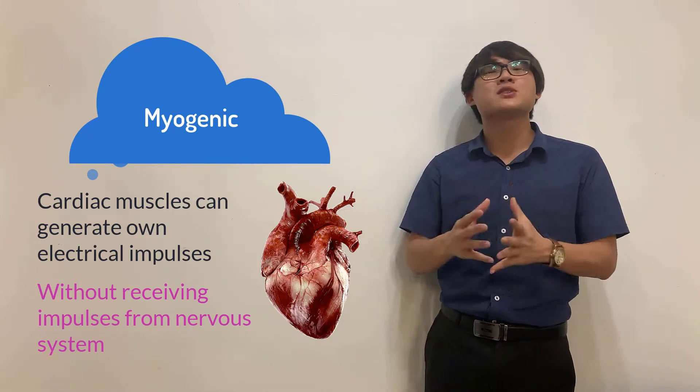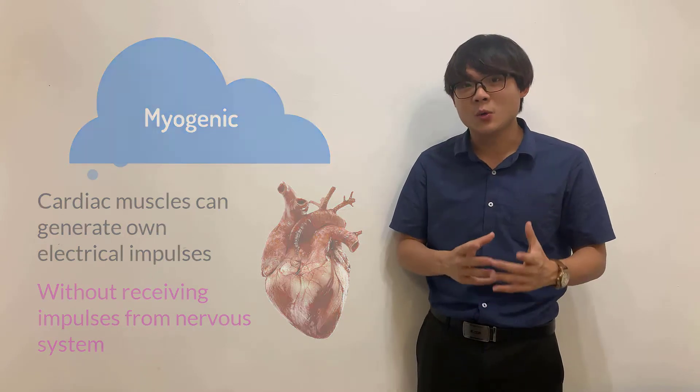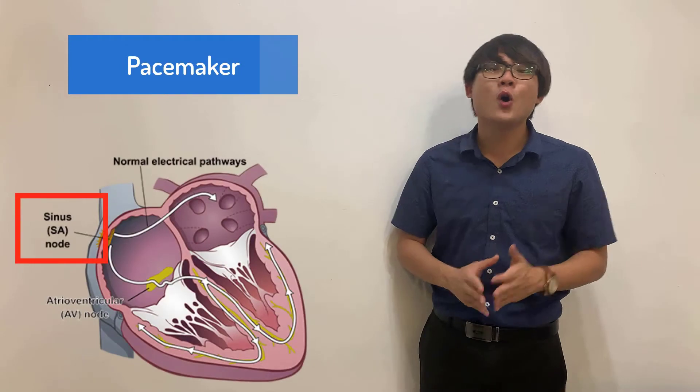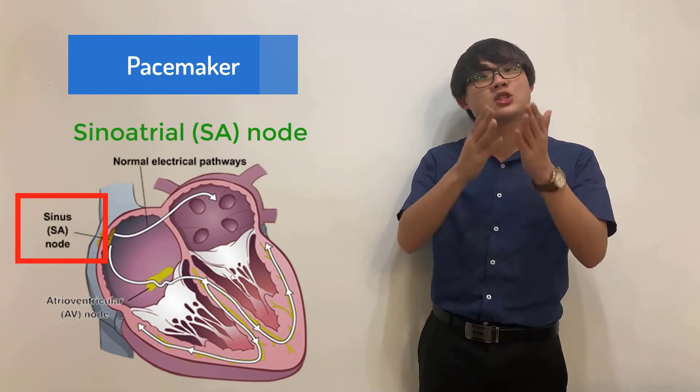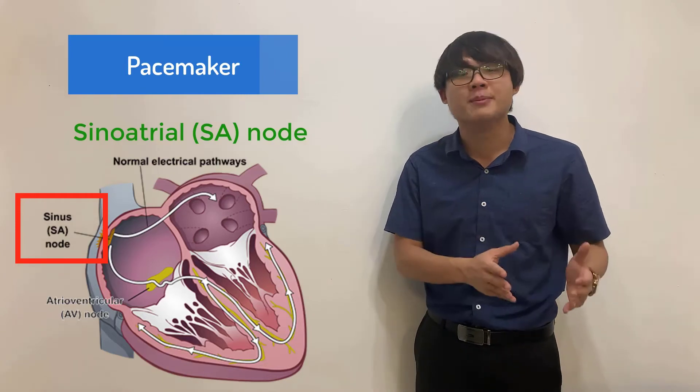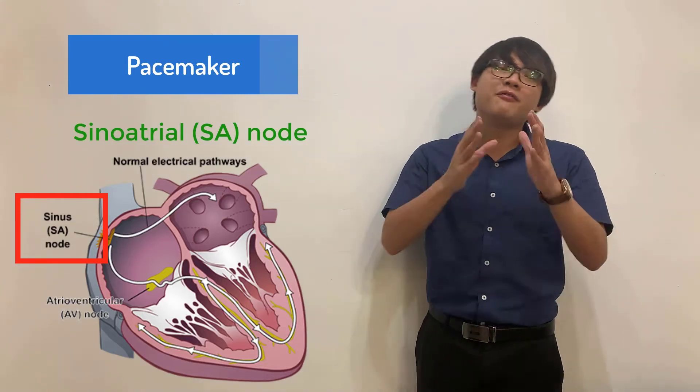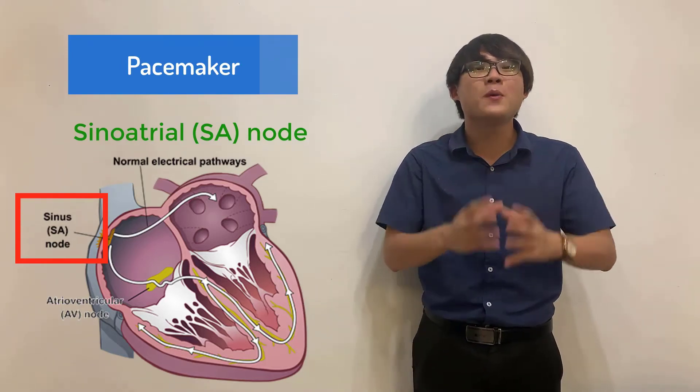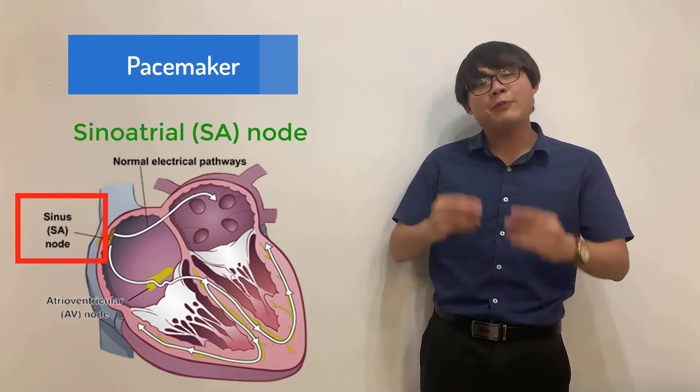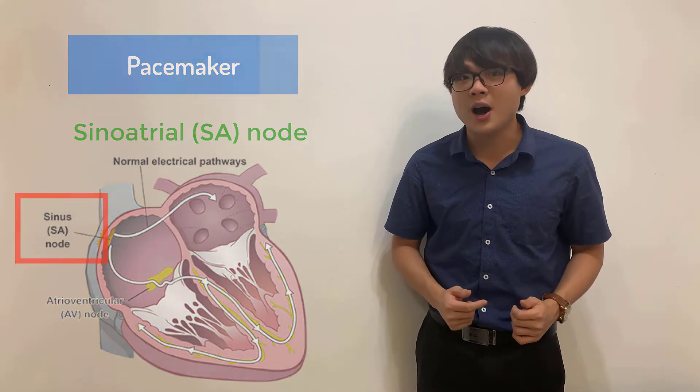The cardiac muscle being myogenic is very important. We have a special group of cardiac muscle that is called the pacemaker. The primary pacemaker of the heart is the SA node or the sinoatrial node. The sinoatrial node is located at the right atrium of the heart. The function of the pacemaker or sinoatrial node is to generate electrical impulses and to kickstart the rhythm of the heart.